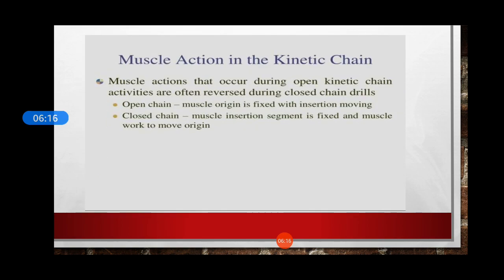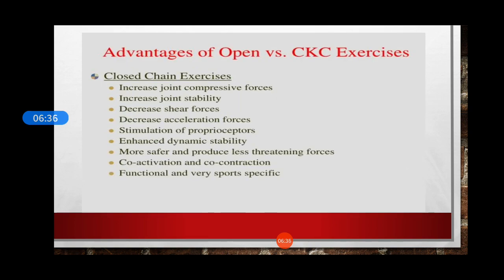When we talk about muscle actions in kinetic chain exercises, in open kinetic chain exercises the muscle origin is fixed and the insertion is moving. While in the closed kinetic chain, the muscle insertion segment remains fixed and the muscle works to move the origin. The advantages of closed kinetic chain exercises include increased joint compressive forces and stability, decreased shear forces, decreased acceleration forces, stimulation of proprioceptors enhancing dynamic stability. They are less harmful, safer, and produce less strain. Co-activation and co-contraction of muscles occur, and they are functional and very sports specific.